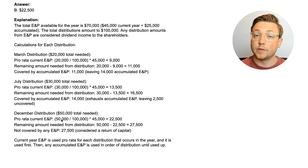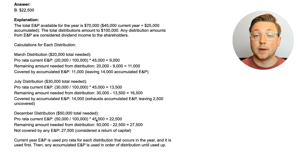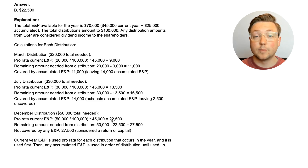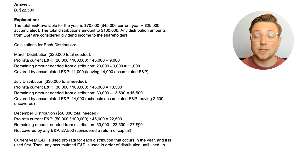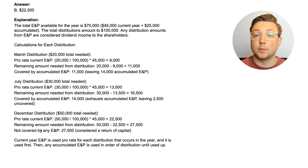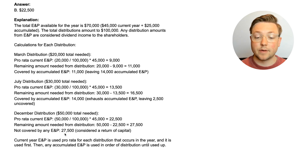For the December distribution — $50,000 of the $100,000 total — multiplied by the $45,000 of current E&P, giving us $22,500. That is the amount covered by the current E&P. We still have $27,500 that we'd want to cover through E&P, but there's no more accumulated E&P and no more current E&P available. So this $27,500 of the December distribution is all considered a return of capital.